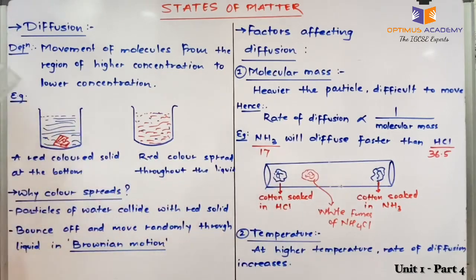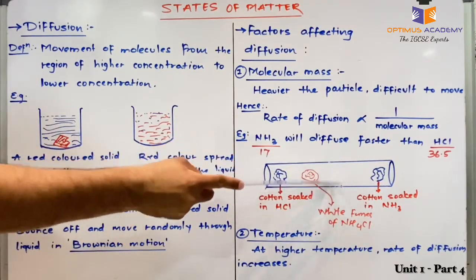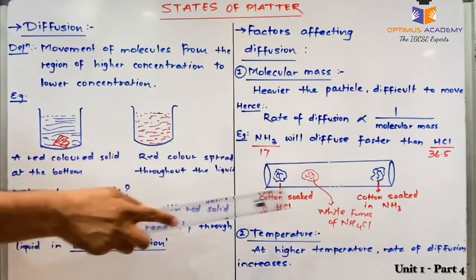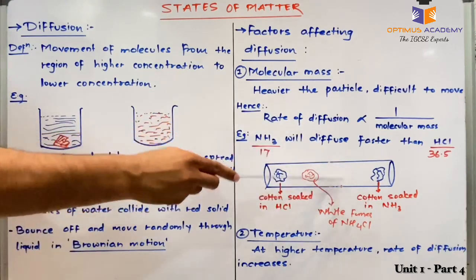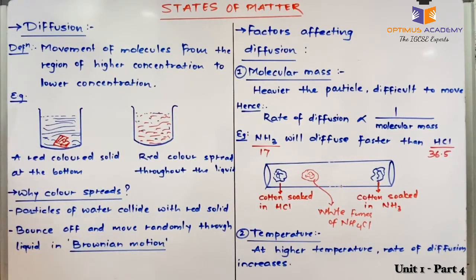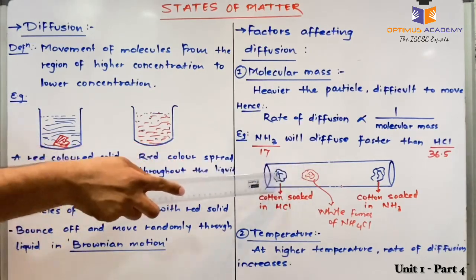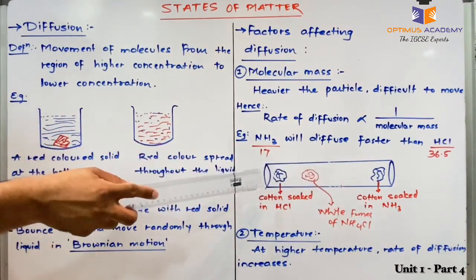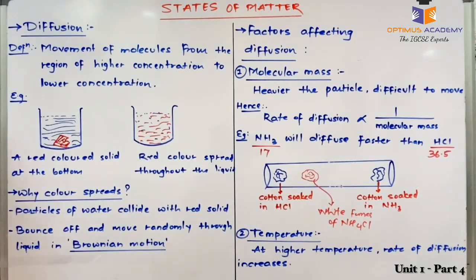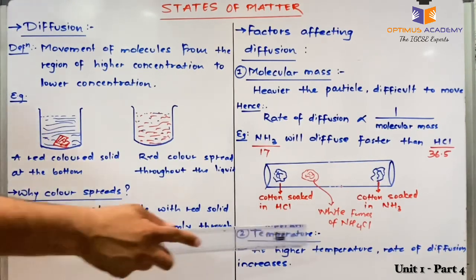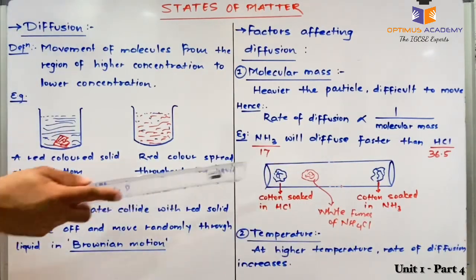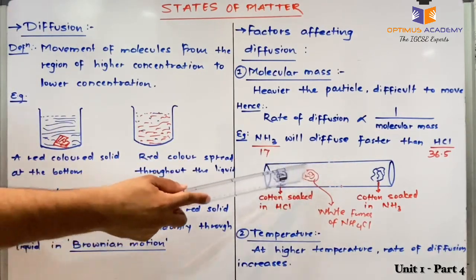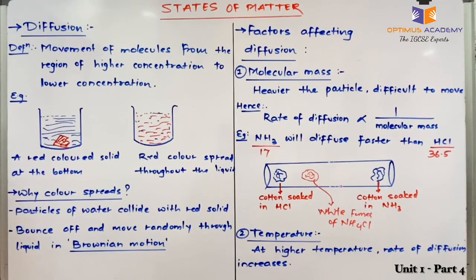If both diffused at the same rate, they would meet at the center of the tube. But since their rates of diffusion are different, they will not meet at the center — they will meet closer to the HCl end, as HCl covers less distance than ammonia. When HCl and ammonia react together, they form dense white fumes of ammonium chloride (NH4Cl). We observe these white fumes near the HCl end, proving that HCl diffuses slower than ammonia.